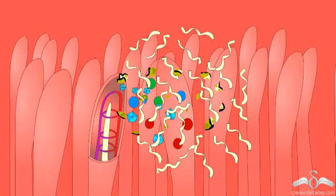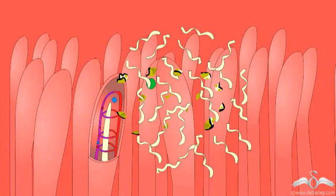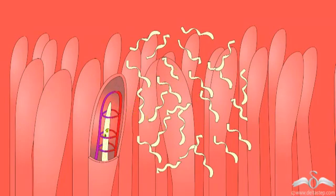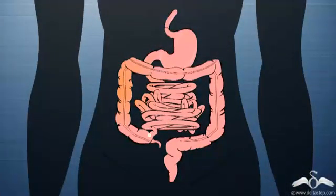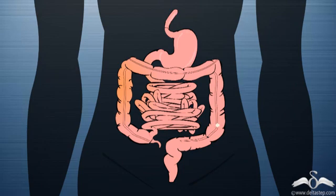So proteins, carbohydrates and fats are getting absorbed in the villi present in the small intestine. Now the bigger molecules or the unabsorbed food passes along this broader pipe which is known as the large intestine, and these undigested, unabsorbed food gets excreted out of our body.